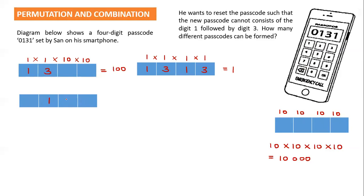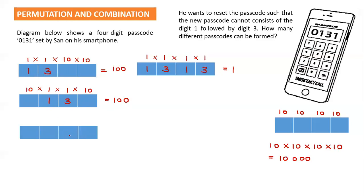For the second arrangement, I place '13' in positions 2 and 3. The first box can be any of 10 digits and the last box also 10, so 10 × 1 × 1 × 10 = 100 arrangements. For the third arrangement, '13' is placed in positions 3 and 4, giving 10 × 10 × 1 × 1 = 100 arrangements.